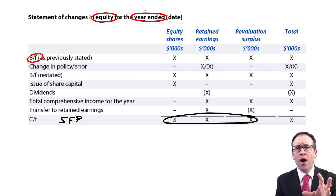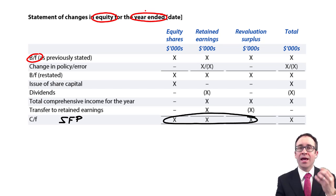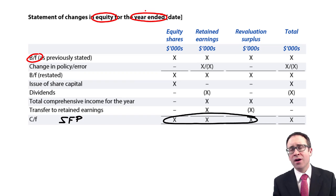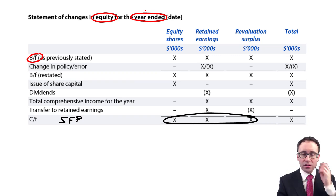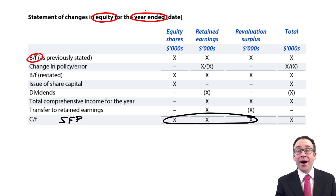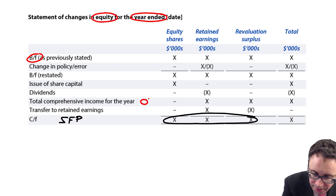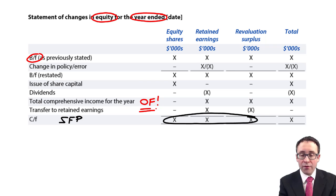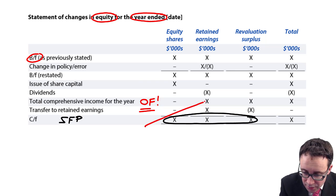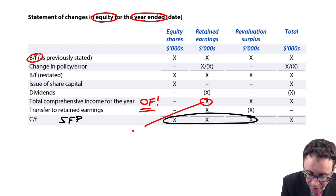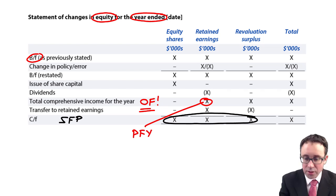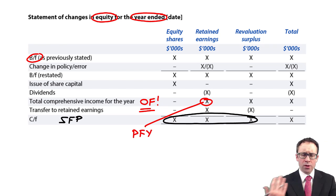The statement of changes in equity is an easy financial statement to get marks on, but you've got to be aware that you'll have made mistakes in the earlier parts and you need to transfer those incorrect figures correctly. Your own figures are going to have to come through for your retained earnings — that figure being your profit for the year.